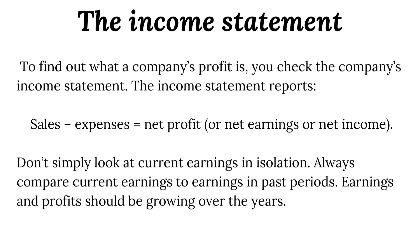Next is the income statement. To find out what a company's profit is, you check that company's income statement. The income statement reports sales minus expenses and gives you net profit or net earnings. You don't simply look at current earnings in isolation. You always have to compare current earnings to earnings in the past so that you can see if there's been progress, so that you can see whether the company has been increasing profit over the years. Profit is like oxygen to a company. If a company is not making any profits, then it means it is slowly dying and you need to look at another company.